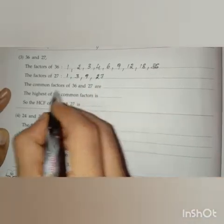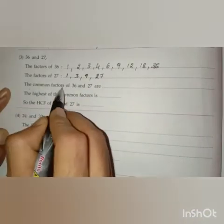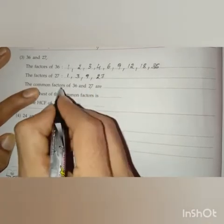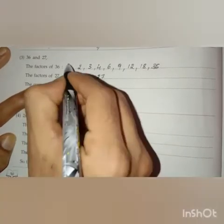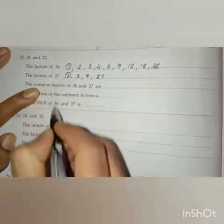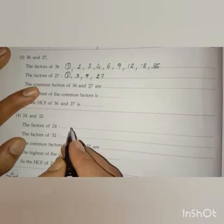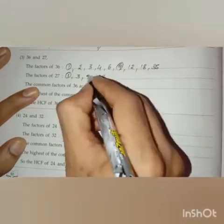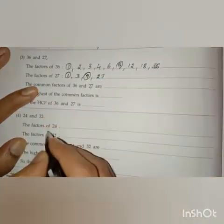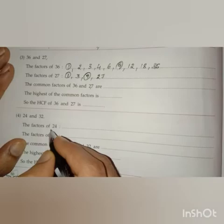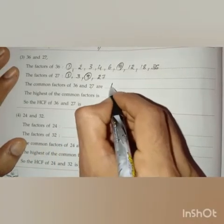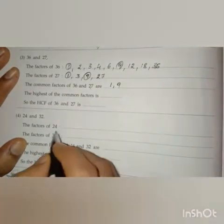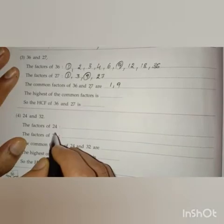Now let us find out the common factors of 36 and 27. 1 is a factor of both numbers, and 9 is also a common factor of both numbers. So 1 and 9 are the common factors of 36 and 27.